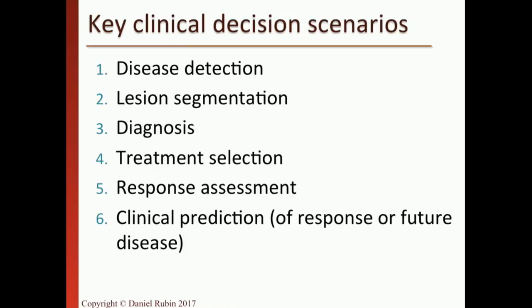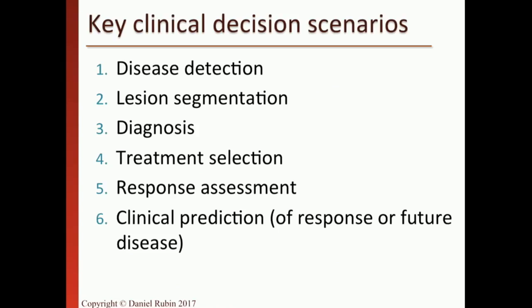Tasks four, five, and six are where clinicians really need help. Treatment selection — what is the best treatment — comes back to digital phenotyping: I know what's cancer, but what type, and what treatment is best? Can the computer see features in the lesion that reveal molecular subtype? Response assessment is also critical: I start a patient on treatment, repeat imaging over time, and figure out how the patient is doing. If the patient isn't responding I need to decide about switching treatment or, if cancer won't respond, potentially transitioning to hospice care.